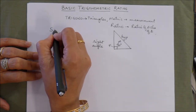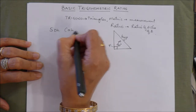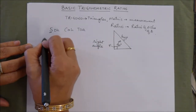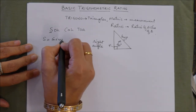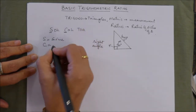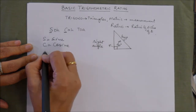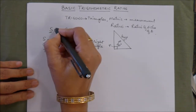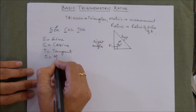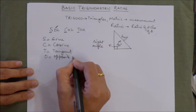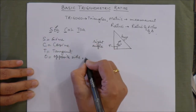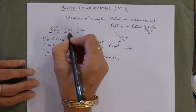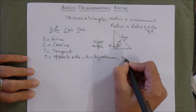The ratios we use are remembered using SOH-CAH-TOA: S stands for sine, C stands for cosine, T is tangent, O is the opposite side, H is hypotenuse, and A is the adjacent side.